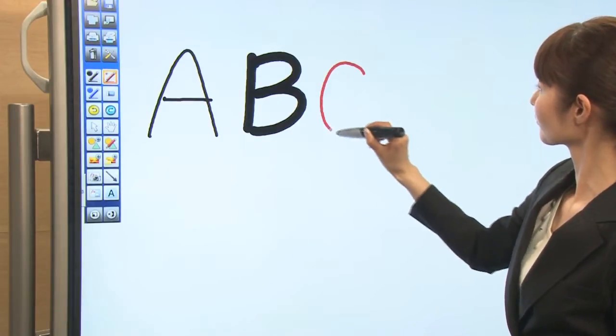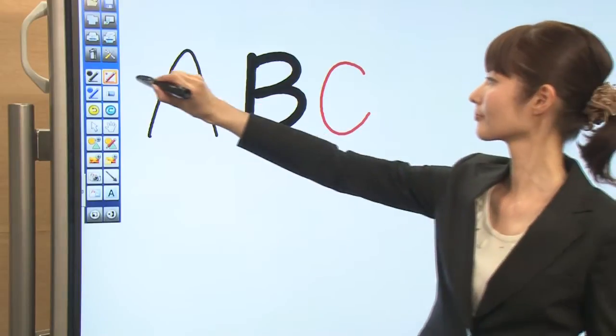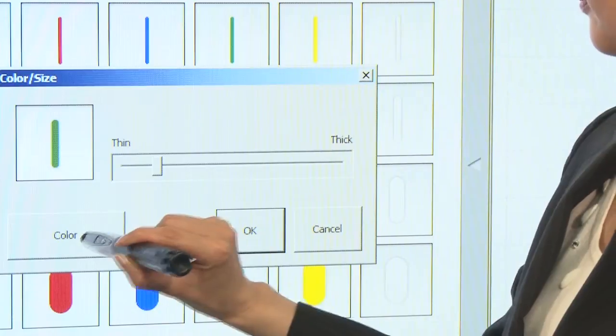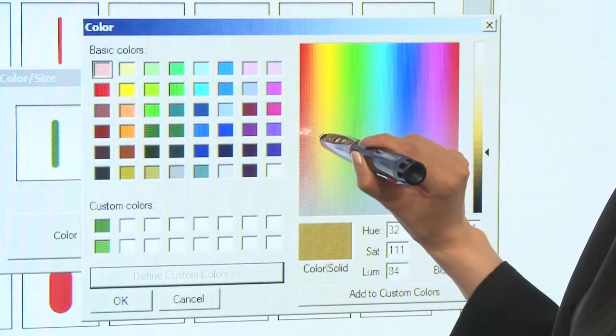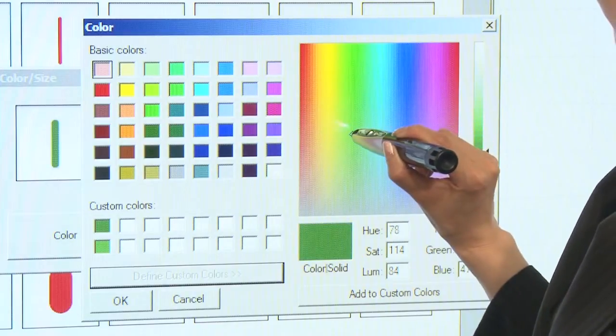You can change the color of a palette. Touch the setting button, then touch the selecting color button. Touch define custom colors, select your favorite color, and touch add to custom colors button.